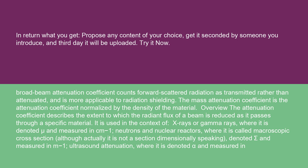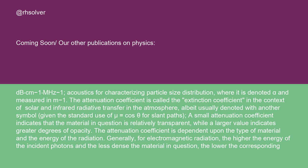It is also used for ultrasound attenuation, where it is denoted α and measured in dB·cm⁻¹·MHz⁻¹; and acoustics for characterizing particle size distribution, where it is denoted α and measured in m⁻¹. The attenuation coefficient is called the extinction coefficient in the context of solar and infrared radiative transfer in the atmosphere, albeit usually denoted with another symbol given the standard use of μ = cos θ for slant paths. A small attenuation coefficient indicates that the material is relatively transparent, while a larger value indicates greater degrees of opacity.